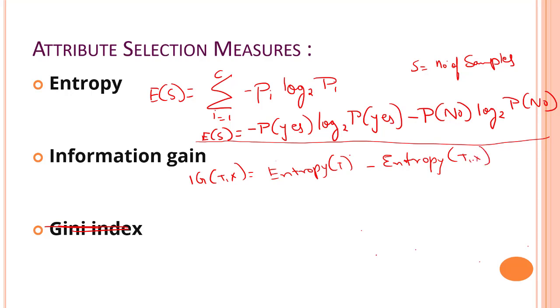Information gain is the statistical property that measures how well given attributes separates the training examples. We can also say that information gain is a decrease in entropy. It computes the difference between entropy before split and average entropy after split of the dataset based on the attribute values.